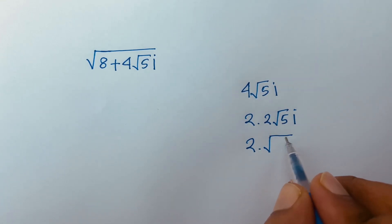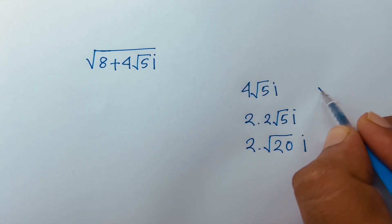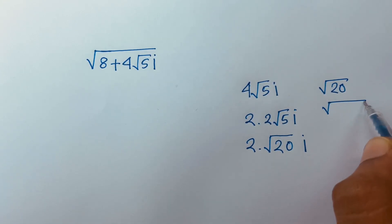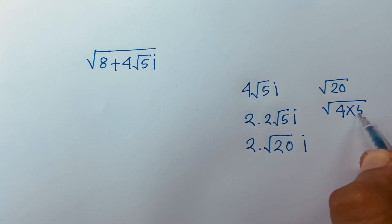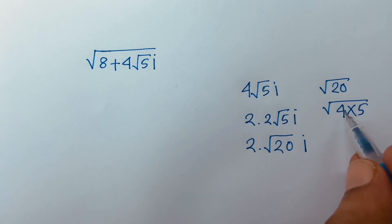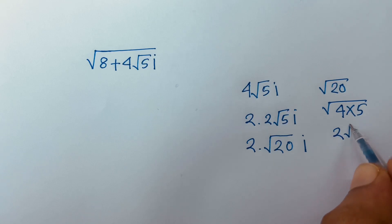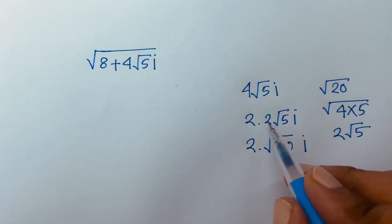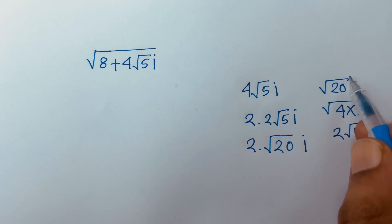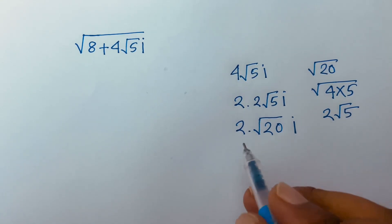So 2 and 2√5 gives us √20·i. Note that √20 = √(4×5), and √4 = 2, so √20 = 2√5. Therefore 2·2√5·i = √20·i.